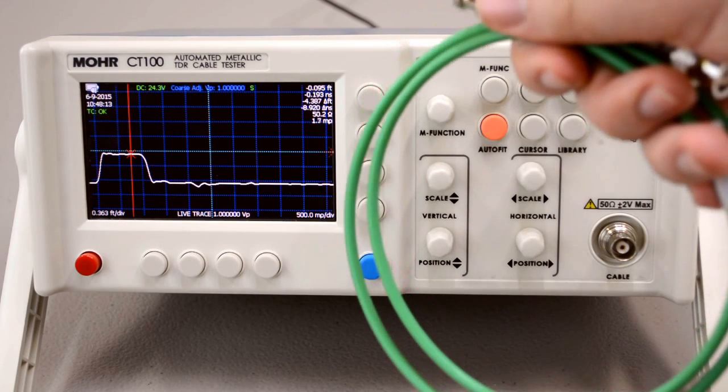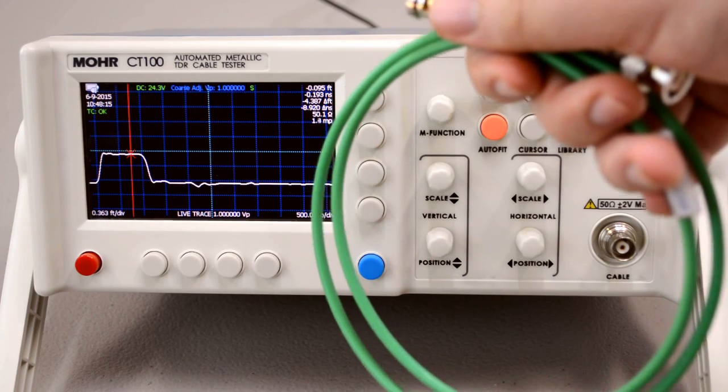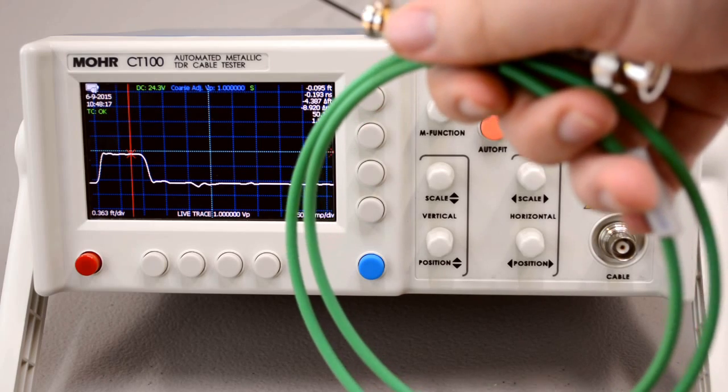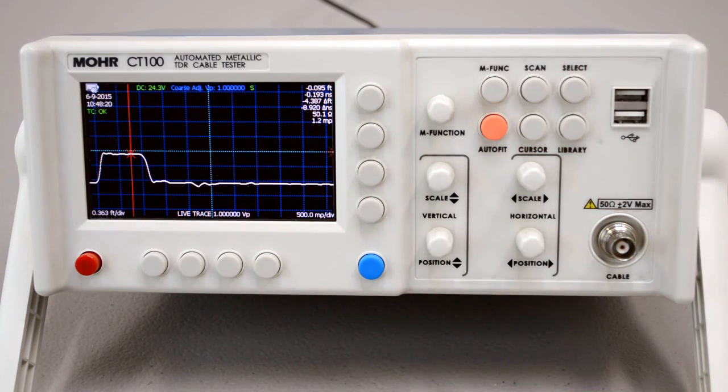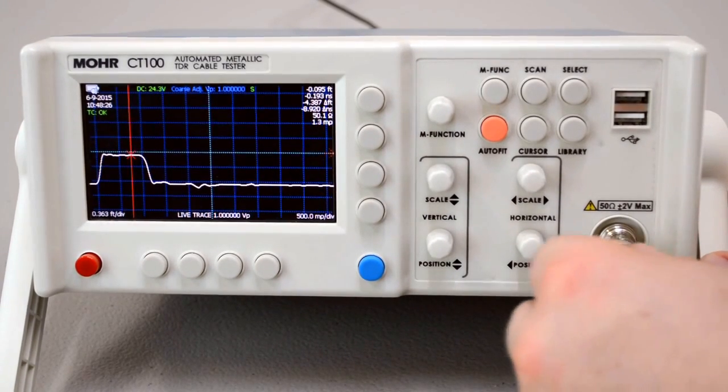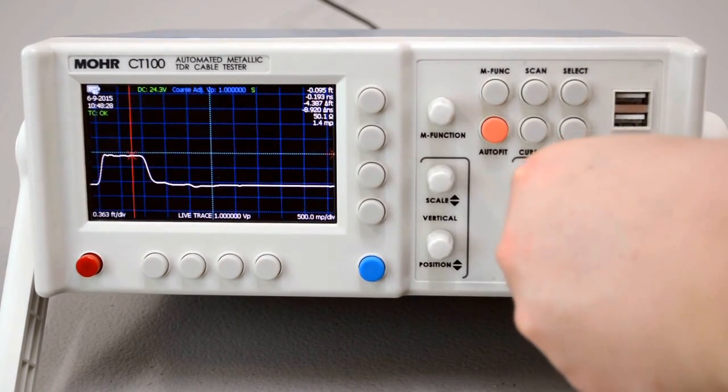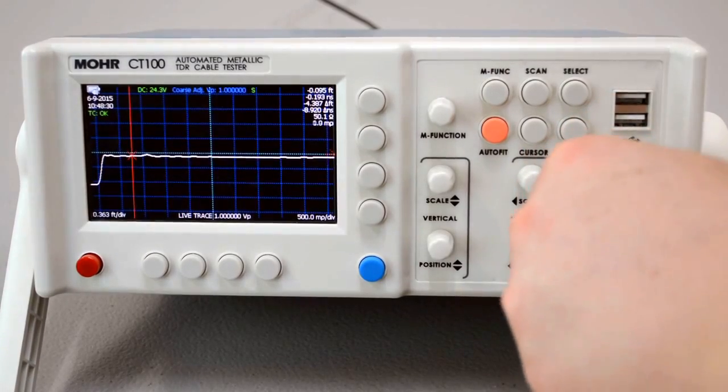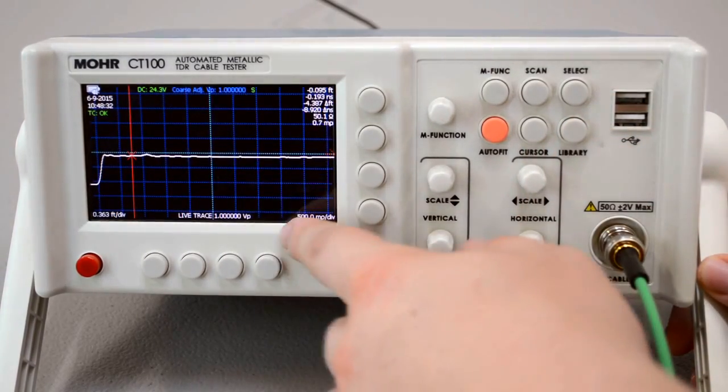This is a sample of a cable that we want to measure. We know that this is exactly three feet long because I have previously measured it. Now we're just going to plug that into the CT100 and I'll give you a close-up view on this screen.